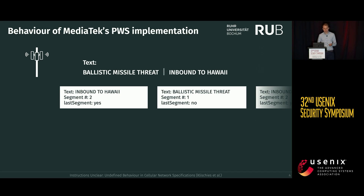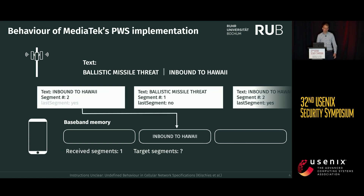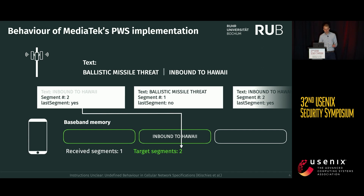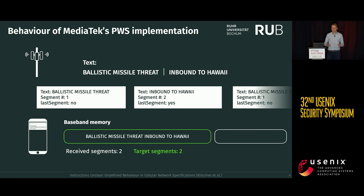To reorder these messages, each segment contains a segment number indicating its position after reordering, and a boolean flag indicating if it is the last segment. In the MediaTek implementation, there is an array that stores the text segments in order, and two integers that store the number of received segments and the total number of segments the baseband must receive before reassembling the message. So if it receives the second segment first, it stores it in the second slot, updates the target count, then receives the first segment, puts it in the first slot, confirms it has received all two segments, reassembles them, and displays the message.